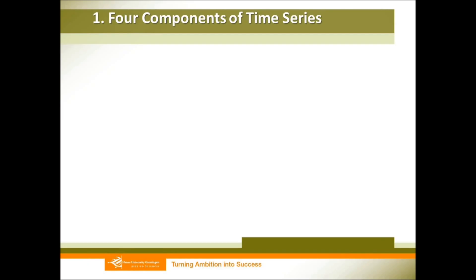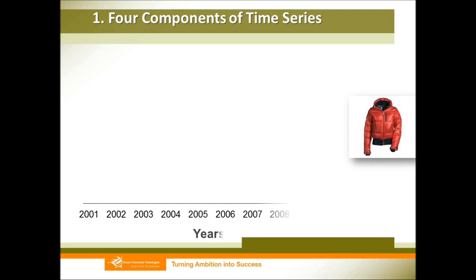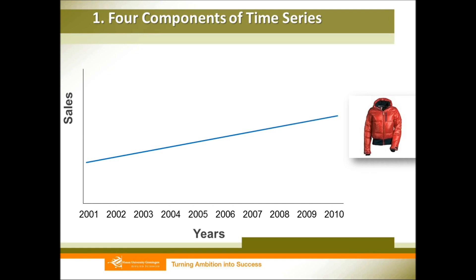First, we need to distinguish the four components of time series. Let's suppose we are now selling winter clothes, which are very sensitive to the seasons. We record the sales from 2001 to 2010. And then we can formulate our regression line based on the sales. We call this the trend line, also called secular trend, which is the first component of time series.